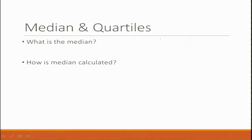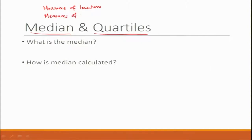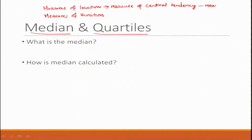Let us talk about some of the fundamental concepts before starting with box plots, beginning with median and quartiles. There are multiple ways to measure data: measures of location and measures of variation. Location refers to central tendency — where the center of the data is located — with examples like mean and median. Measures of variation describe how much variability is in the data, with examples like variance, range, and standard deviation.